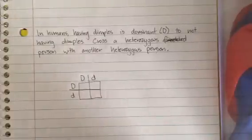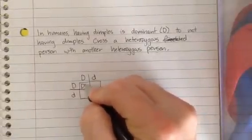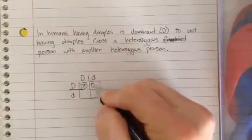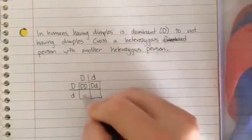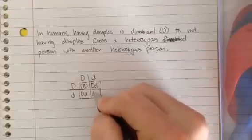So golden rule of crosses, rows go with rows, columns go with columns. So this one would be big D, big D. This one, big D, small d. This one, big D, little d. And this one has two small.